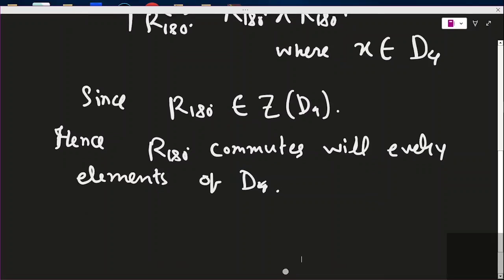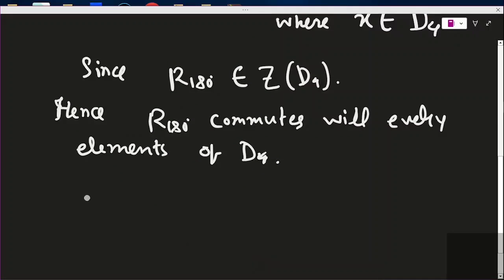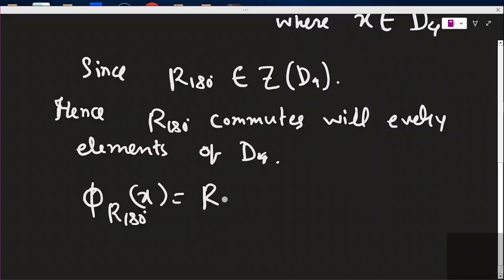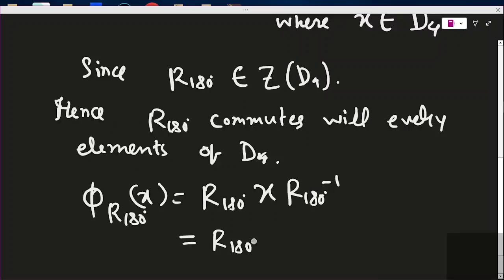So, phi_{r180°}(x) = r180° · x · (r180°)⁻¹. Since r180° commutes with x, this simplifies. But first, what is (r180°)⁻¹?